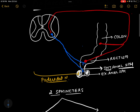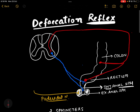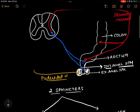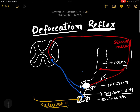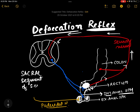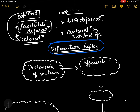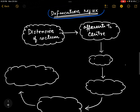The defecation reflex starts whenever there is distension of the rectum. Whenever there is fecal matter in the rectum, it exerts pressure on the rectal wall, resulting in distension. This stretch sensation is carried through the sensory nerves, which finally reach the center — the spinal cord, mainly the sacral segment.